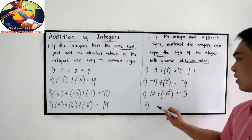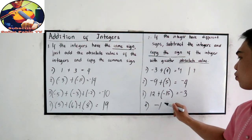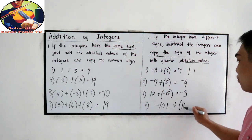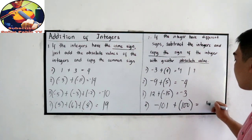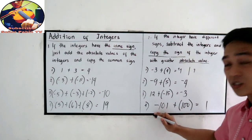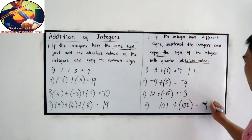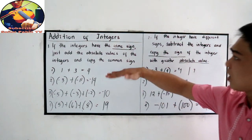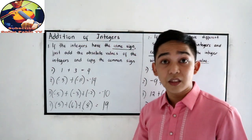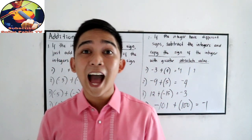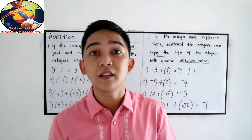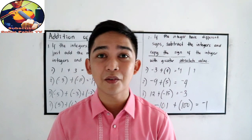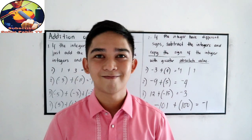Number four: what if we have negative one hundred one plus positive one hundred? One hundred one minus one hundred is one. The absolute value of one hundred one is greater, and its sign is negative, so the answer is negative one. So these are our rules for adding integers: if they have the same sign, add the numbers and copy their common sign; for unlike signs, subtract the numbers and copy the sign of the integer with the greater absolute value.